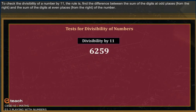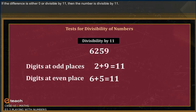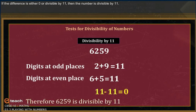To check the divisibility of a number by eleven, the rule is: find the difference between the sum of the digits at the odd places from the right and the sum of the digits at the even places from the right. If the difference is either zero or divisible by eleven, then the number is divisible by eleven.